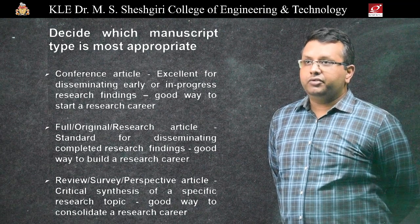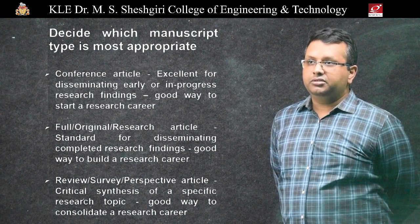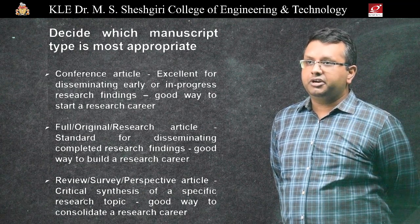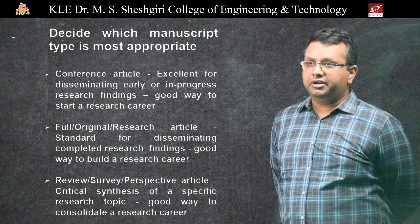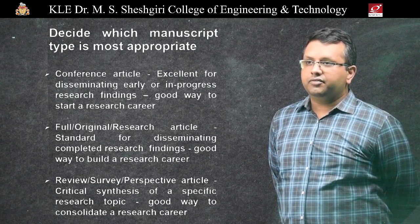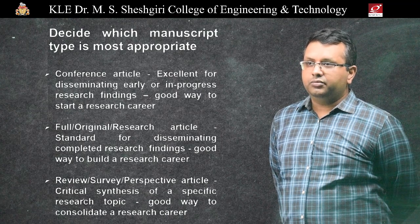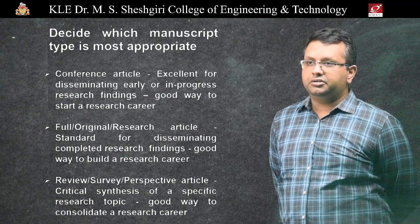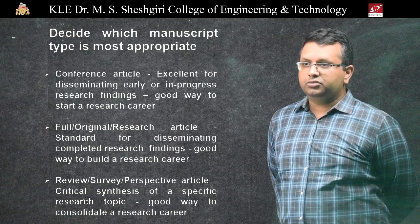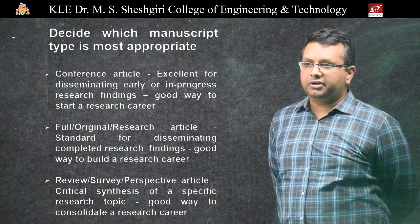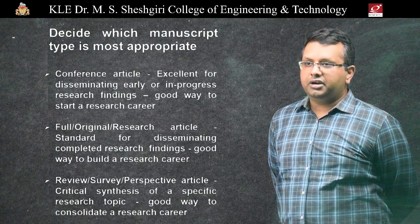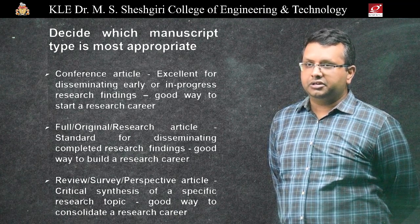We start off by deciding which manuscript type is most appropriate. This could include a conference article, which is excellent to disseminate early or in-progress research findings and is a good way to start a research career. You could also have a full or research article, which is the standard to disseminate completed research findings. There could also be a review, survey, or prospective article, which is a critical synthesis of a specific research topic and is a good way to consolidate a research career.